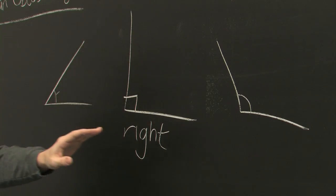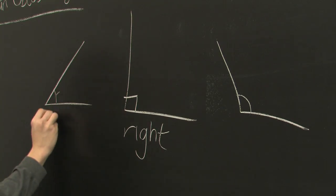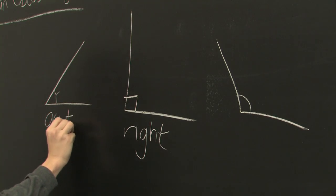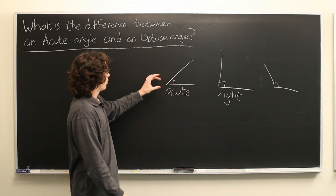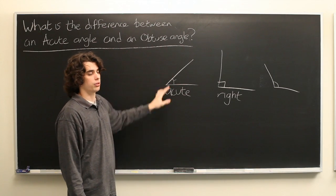But which one of these is acute and which one is obtuse? The answer is that this is acute. When the angle is less than 90 degrees, the angle is said to be acute.